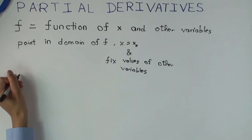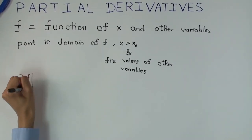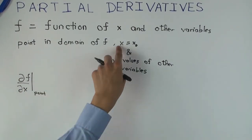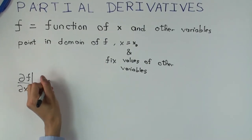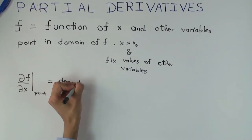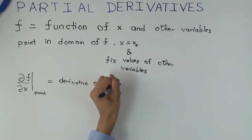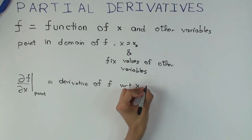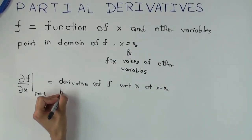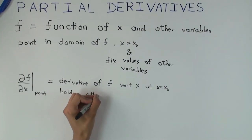Given this, you can define the partial derivative of f with respect to x at this point, whatever the point is. To describe the partial derivative, you need to know the point — not just the value of x, but also the value of the other variables. And this is basically the derivative of f with respect to x at x equals x naught, holding other variables constant.